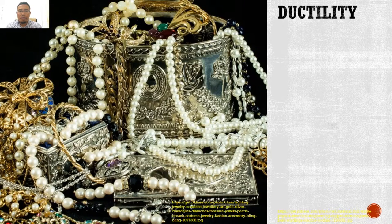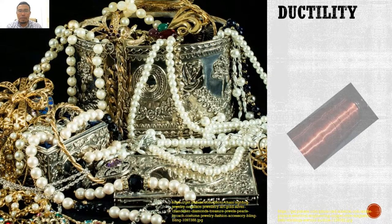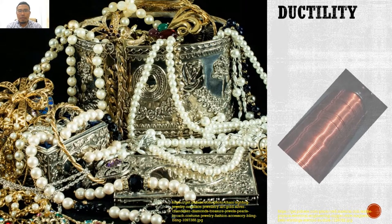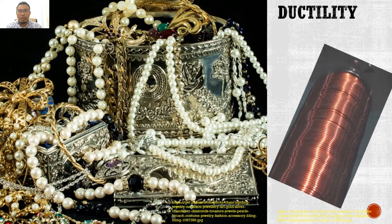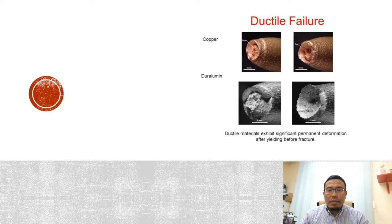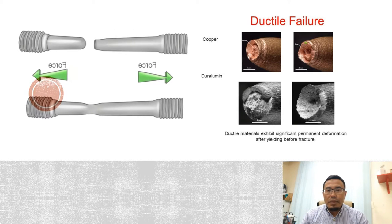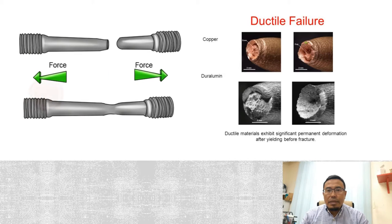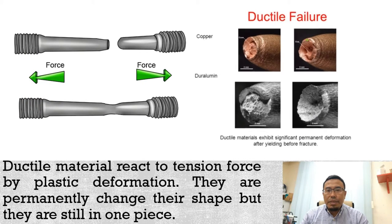If you like jewelry, you are probably wearing a material that has the mechanical property of ductility. Ductility means something can stretch without breaking. For example, a long copper wire can be stretched into whatever shape you want, or gold can be shaped for making jewelry. Ductile materials react to tension force by plastic deformation — they are permanently changed in shape but remain in one piece.